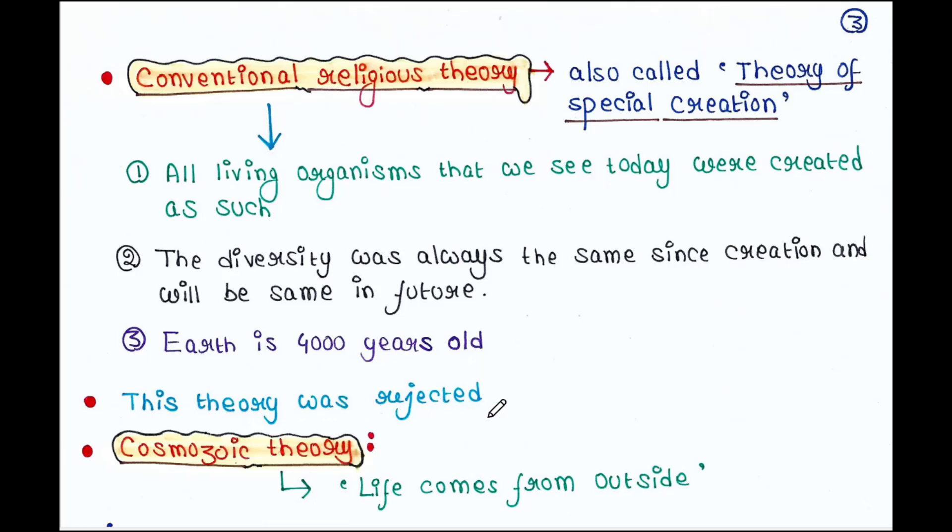Now, we know that the organisms we see today are very much different from their ancestors. Previous creatures evolved and formed present organisms. And the diversity among living organisms were different and will be different in future. And, of course, our Earth is 4.5 billion years old, not 4,000 years old. So, this theory was strongly rejected.